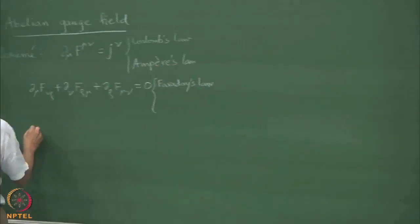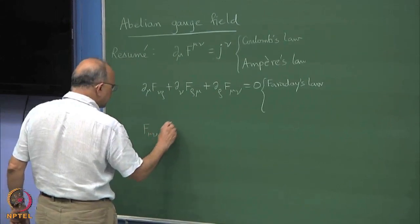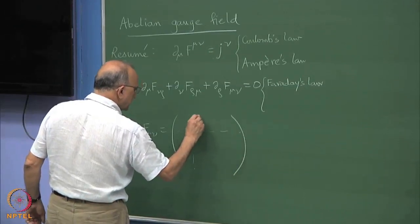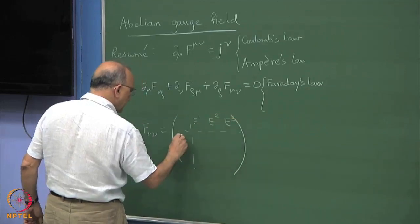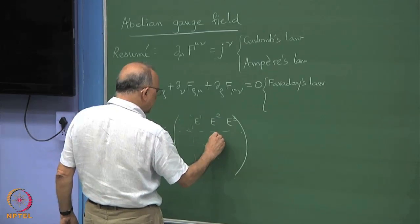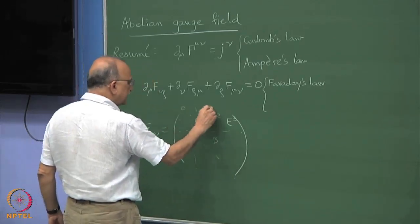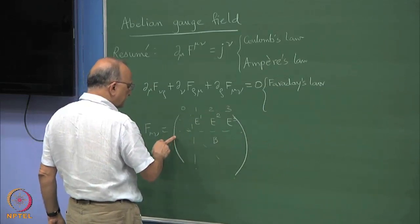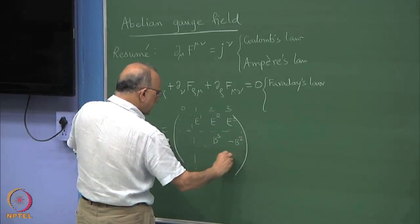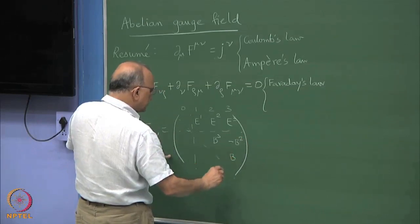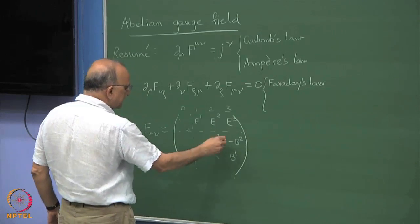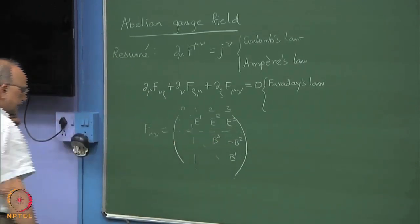If you put the indices, I hope everybody knows there's a mapping from F_mu_nu language to E, B language. It's an antisymmetric tensor with E_1, E_2, E_3 here, and B components where indices 1,2 give B_3, indices 1,3 give minus B_2, and 2,3 gives B_1.